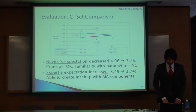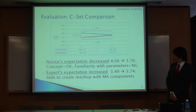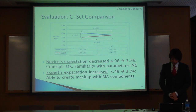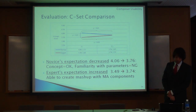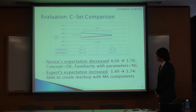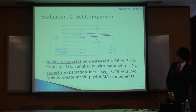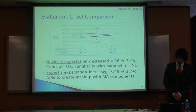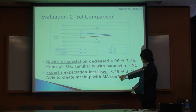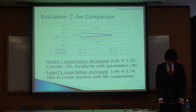For the pre and post questionnaire results observing composer expectation: novice composers' expectation scores decreased from 4.06 to 3.76, suggesting they understand the concept at the next level but may not be familiar with the configuration of parameters. Expert composers' expectation scores increased from 3.49 to 3.74, and they believe they are able to create mashups with mobile application components more effectively than before.